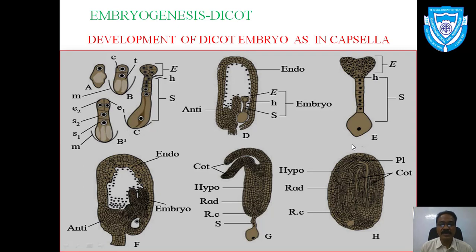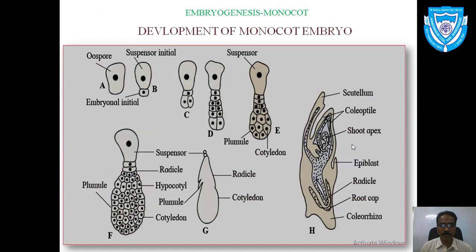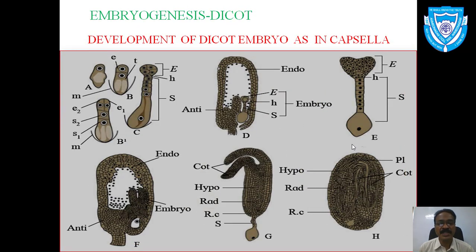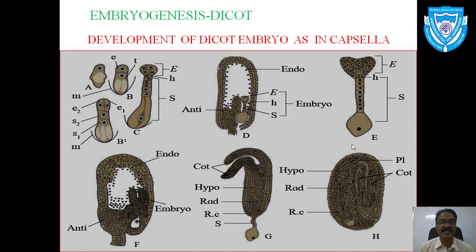Hello students, welcome again. We are dealing with biology, and the topic is reproduction. We have discussed so many things up to fertilization — last time we finished fertilization and the characteristic of angiosperm, which is double fertilization. Double fertilization has its own significance. Angiospermic plants are specialized plants where the seed is developed. After double fertilization, the zygote is developed and endosperm formation takes place.